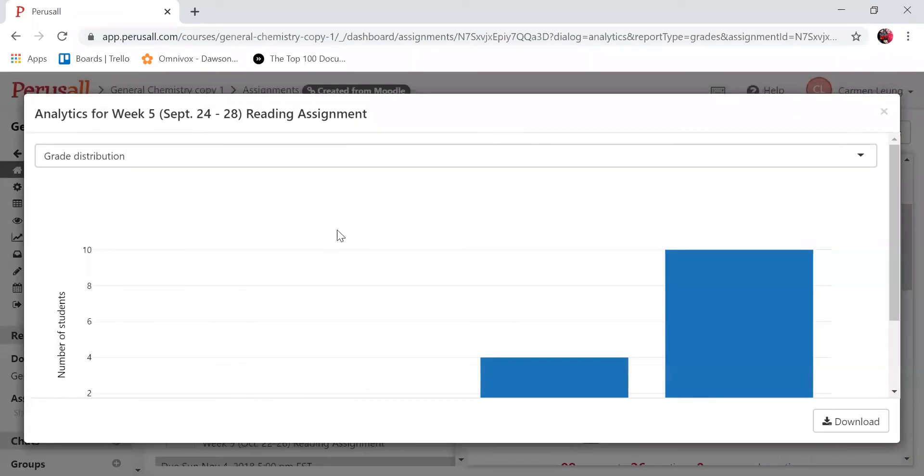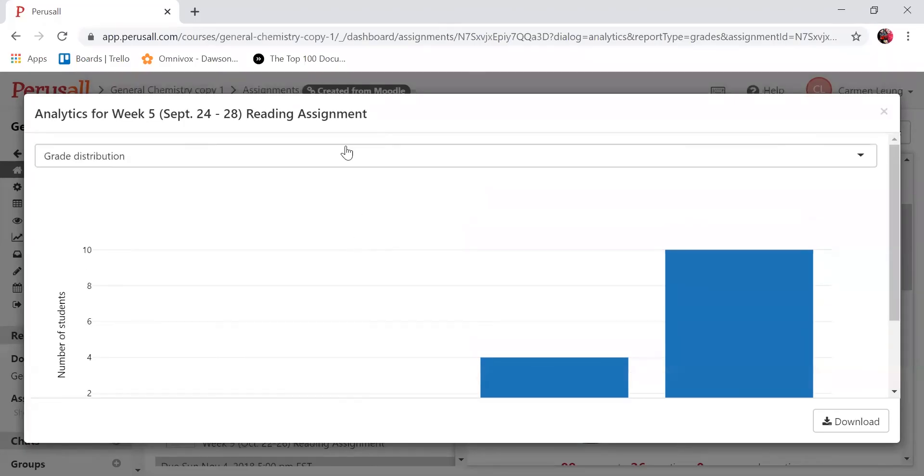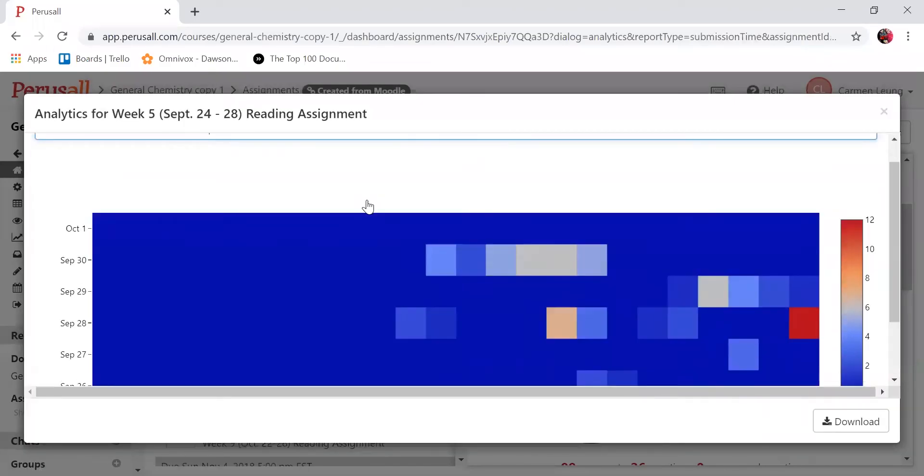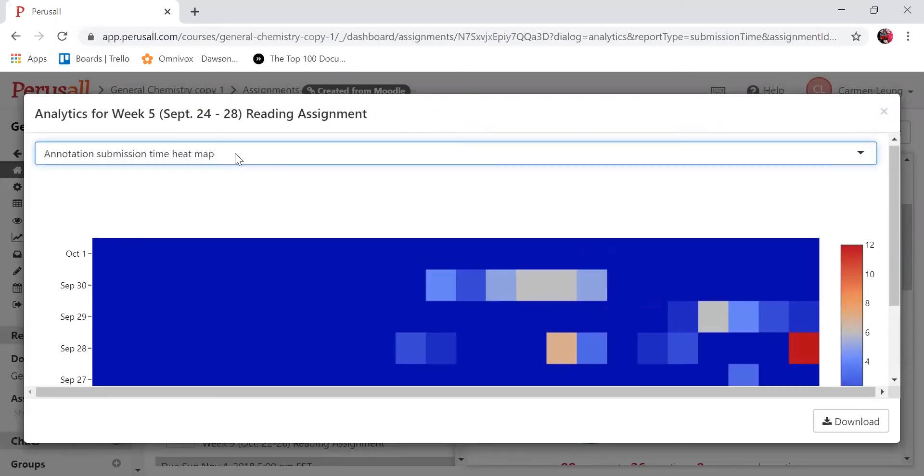In terms of analytics, you can get a summary of all the grades for students who did the reading assignment. You can look at this time heat map, which gives you an idea of when these students were engaged in the activity—it's usually right before a deadline.